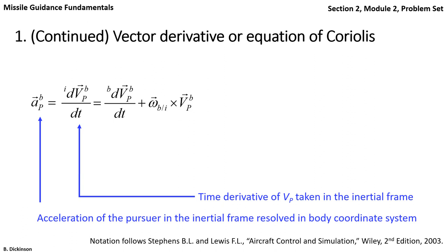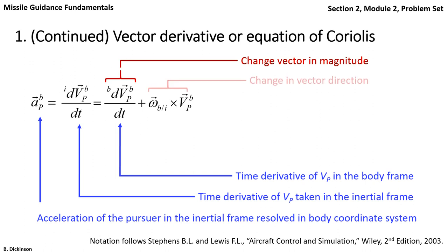And in doing this, we have two components. And this is the equation of Coriolis or the vector derivative. The first component accounts for the change in vector magnitude. The second component accounts for the change in vector direction. It's a cross product between the angular velocity vector and the pursuer velocity vector.